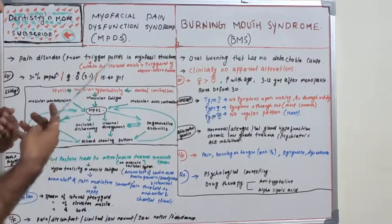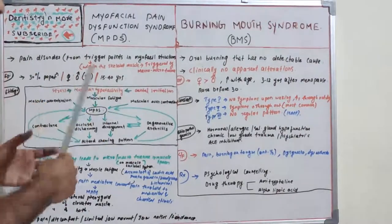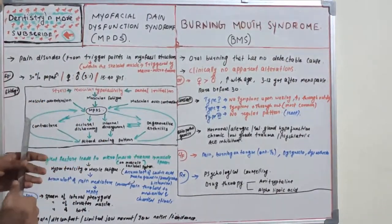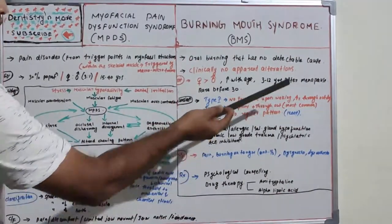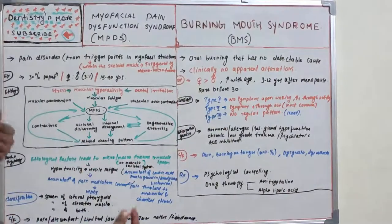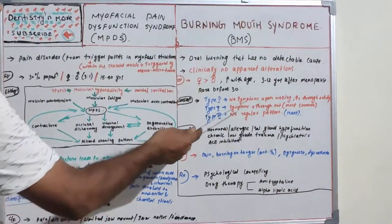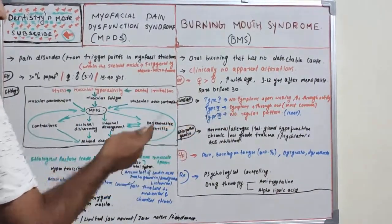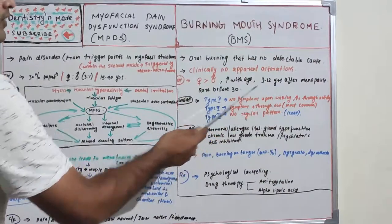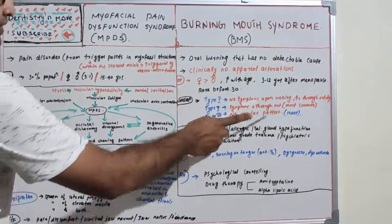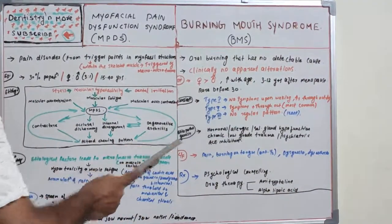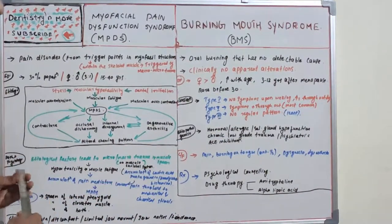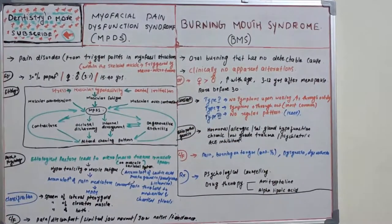BMS is classified into three types based on symptoms upon waking. Type 1: no symptom upon waking, but increases throughout the day. Type 2: symptoms present upon waking and throughout the day — this is the most common type. Type 3: no regular pattern, and this is the least common.